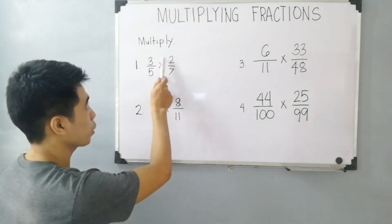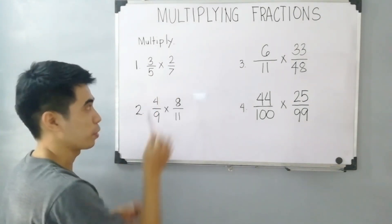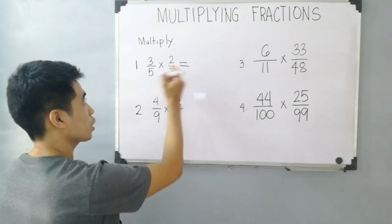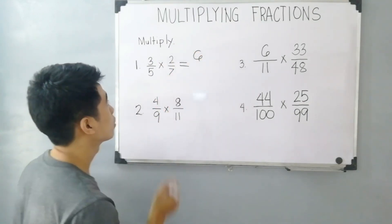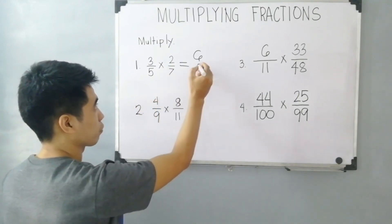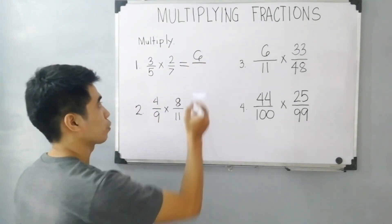Just multiply numerators and denominators. 3 times 2, that is equal to 6. 5 times 7, that is equal to 35.